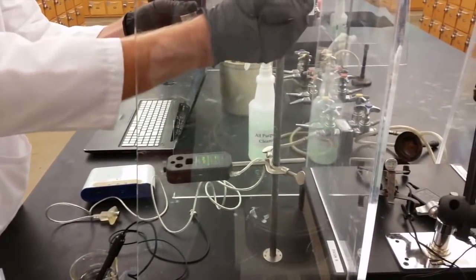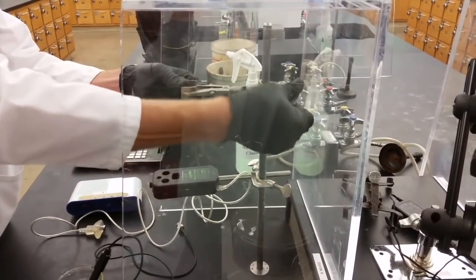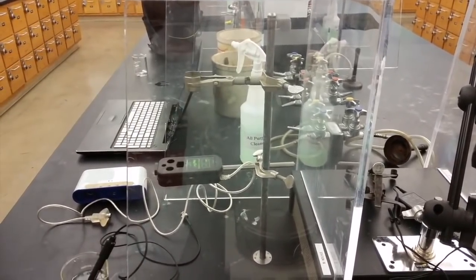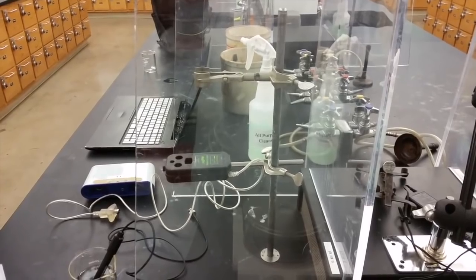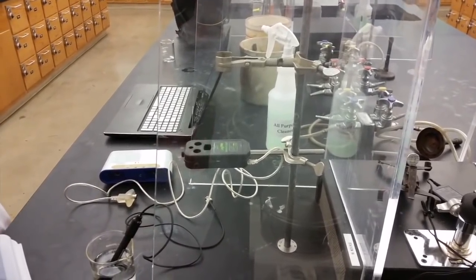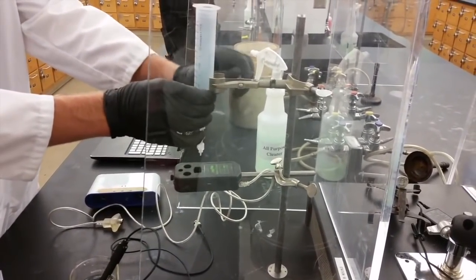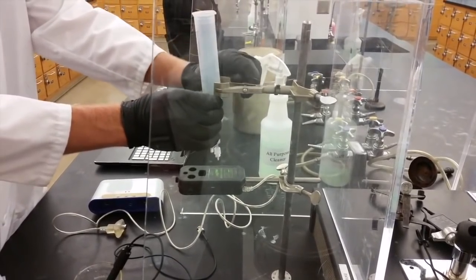You should also have a utility clamp which looks like this already attached to your ring stand. If you're missing one look around the room to find an extra or ask your TA for help. You'll use the utility clamp to attach the assembled drop dispenser to the ring stand making sure to place it above the drop counter.